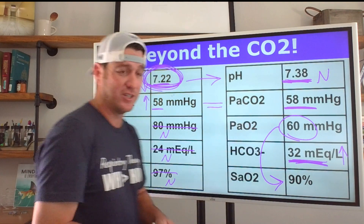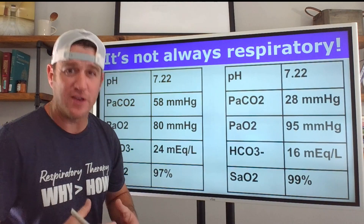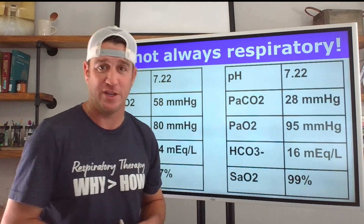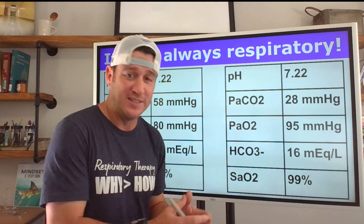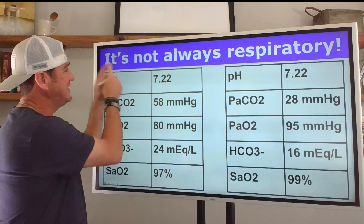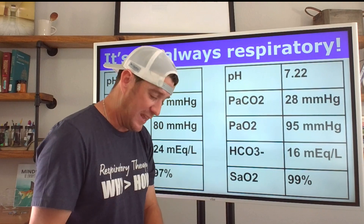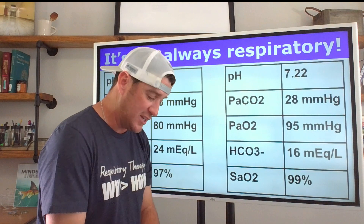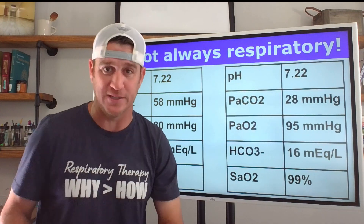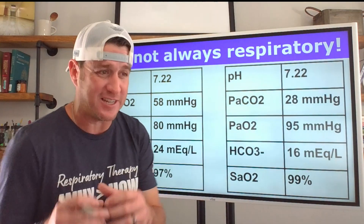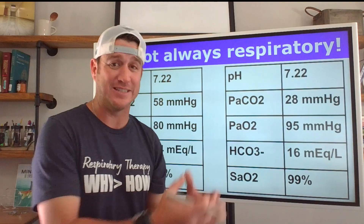There's one more thing to understand. It's not just CO2 and pH — you also have to ask yourself: is this a respiratory problem or is this a metabolic problem? Egan's states that by convention, in blood gas classification, metabolic refers to non-ventilatory processes and respiratory refers to ventilatory processes and disturbances. So we need to ask not just whether to ventilate or oxygenate, but whether this is a respiratory or metabolic disturbance.